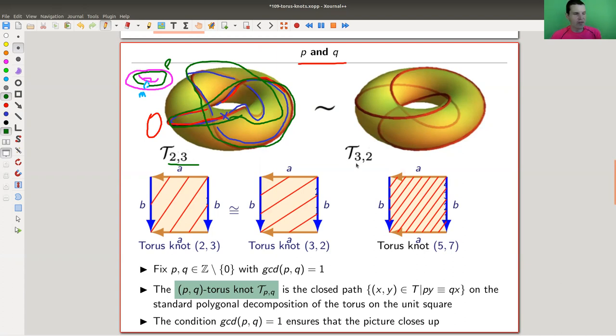Similarly, this just goes in the opposite direction. If you like to think of them as living on the usual presentation of a torus using a square, then T(2,3) does two turns here - one, two, and three turns in this direction. And similarly, T(3,2) does three turns here, and two turns in this direction. And whatever, T(5,7) would do five turns here - five and seven in this direction. So one, two, three, four, five, six, seven, and so on.